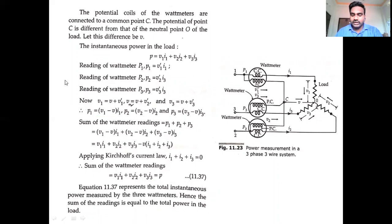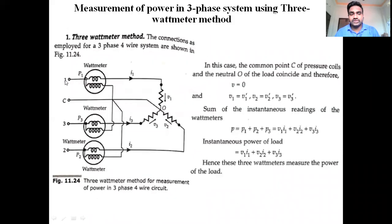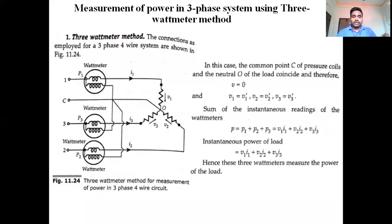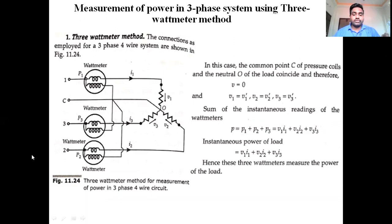Coming to the next explanation — measurement of power in a three-phase three-wire system using the three-wattmeter method. Actually, it is a three-phase four-wire system. In a three-phase four-wire system with three wattmeters connected, wattmeter 1 is connected to line 1 with current I1.